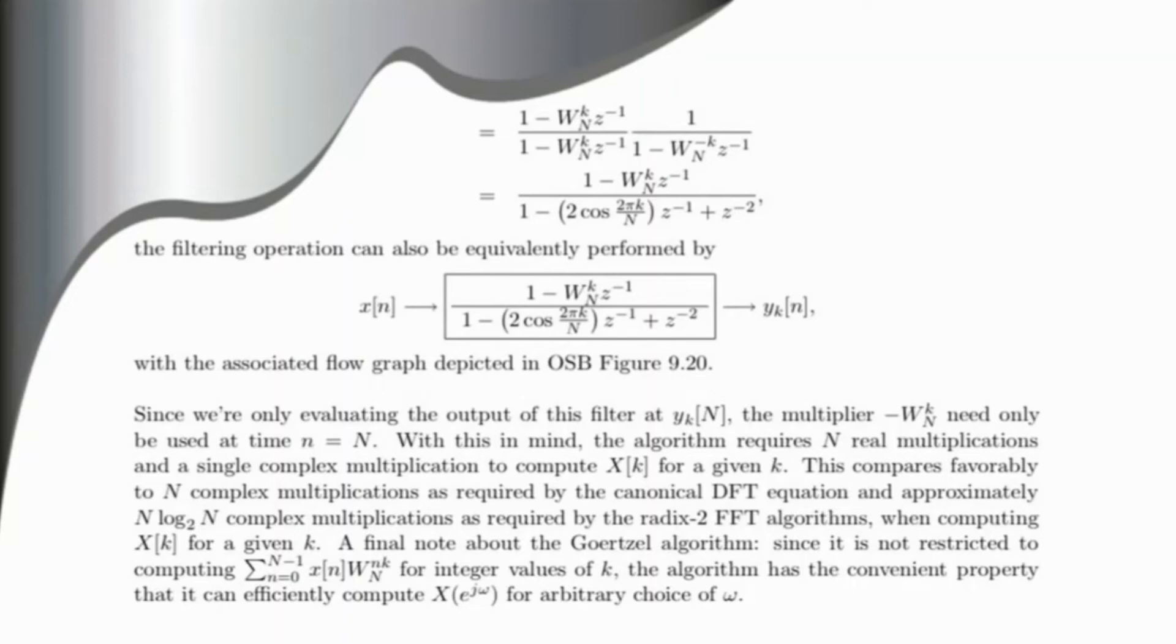With this in mind, the algorithm requires N real multiplications and a single complex multiplication to compute X(k) for a given k. This compares favorably to N complex multiplications required by the canonical DFT equation and approximately Nlog2N complex multiplications required by the radix-2 FFT algorithm for computing X(k) for a given k. A final note about the Goertzel algorithm: since it is not restricted to computing for integer values of k, the algorithm has the convenient property that it can efficiently compute X(e^jω) for arbitrary values of ω.